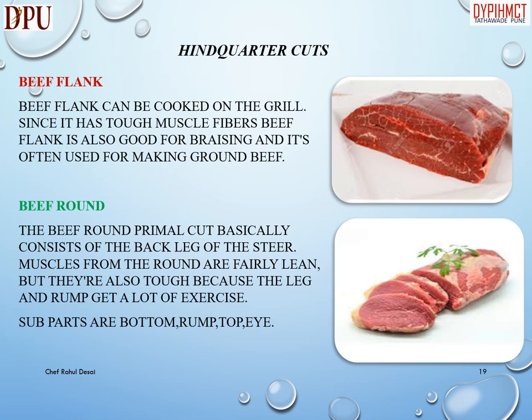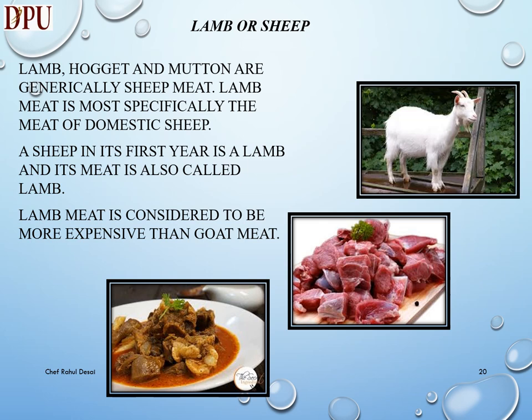Beef flank can be cooked on the grill. Since it has tough muscle fibers, beef flank is also good for braising and is often used for making ground beef. Beef round: the beef round primal cut basically consists of the back leg of the steer. Muscles from the round are fairly lean but tough because the leg and rump get a lot of exercise. Sub-parts are: bottom, rump, top, and eye.